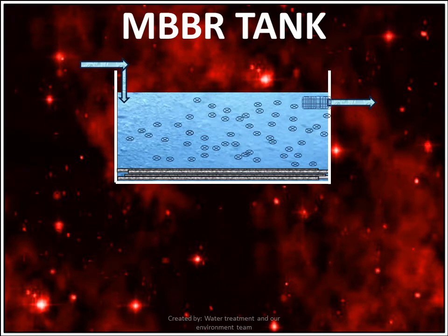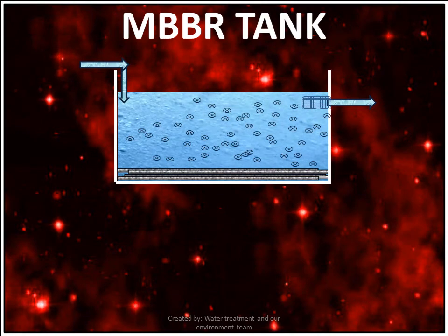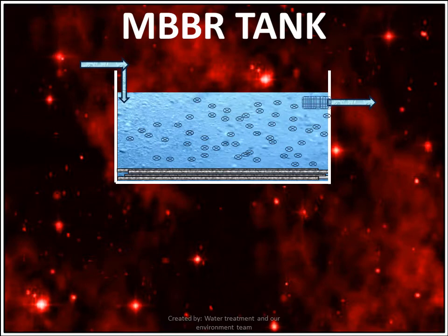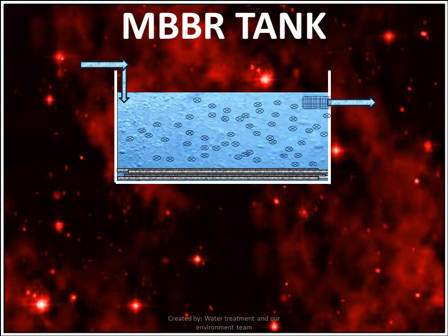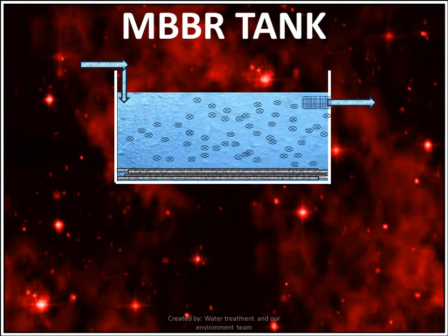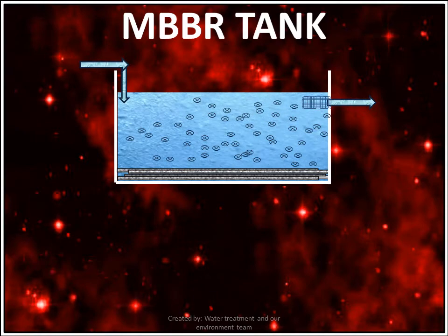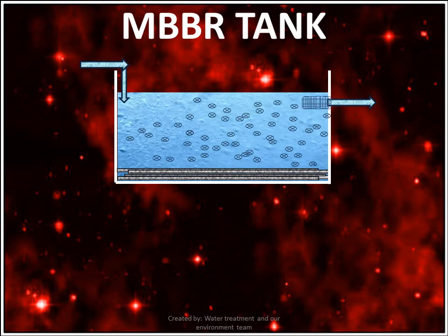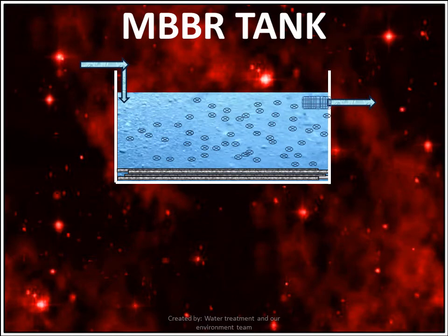The biofilm carriers are maintained in the reactor by the use of perforated plates at the tank outlet. Air agitation or mixers are applied in a manner to continuously circulate the packing. The packing may fill 20–50% of the tank volume. The specific surface area of packing is about 500 m² per meter cube of packing volume.